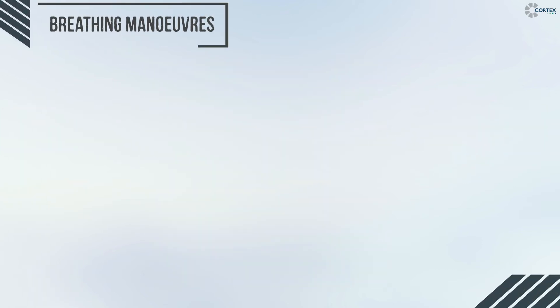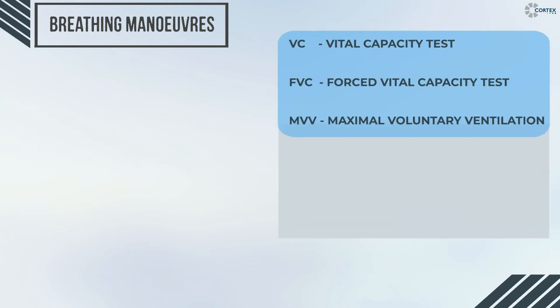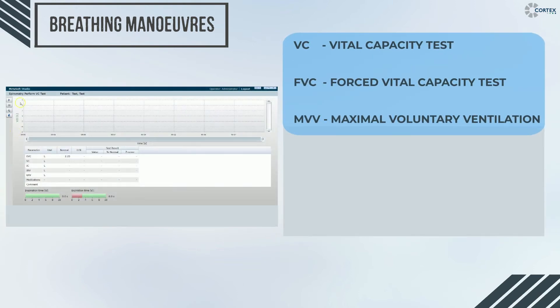The main maneuvers of spirometry are listed on this table. Starting off with a vital capacity test, which is mostly used on patients with respiratory limitations where no forcing of the breathing maneuver is required.